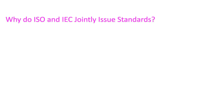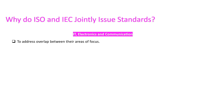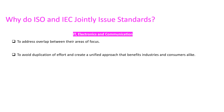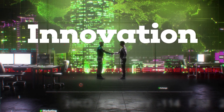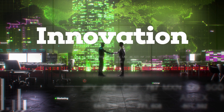Now the question arises: why do ISO and IEC jointly issue the standard? The simple answer is to address the overlap between their areas of focus, such as in the field of IT, electronics, and communications. It helps to avoid duplication of effort and create a unified approach that benefits industries and consumers alike. This cooperation ensures that standards are globally relevant and cover all technical aspects including safety, efficiency, and performance.